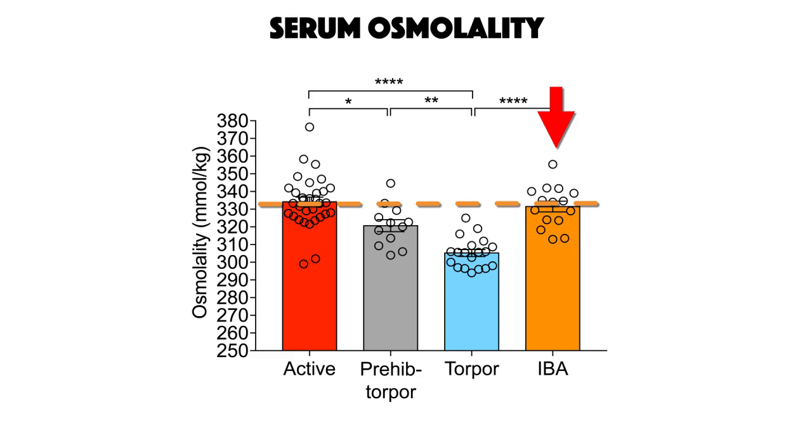And we thought this was really interesting because it means that without any access to food or water, they are able to internally regulate the composition of their blood. And when we looked at the composition of their blood, we found that during torpor, they deplete their levels of sodium, potassium, lactate, and blood urea nitrogen. And these major electrolytes and metabolites are what's causing this decrease in serum osmolality.